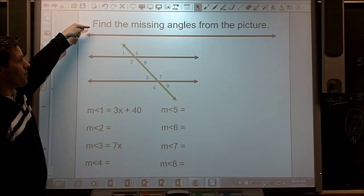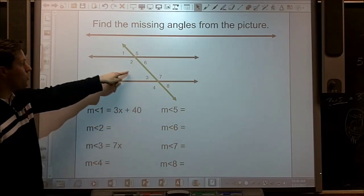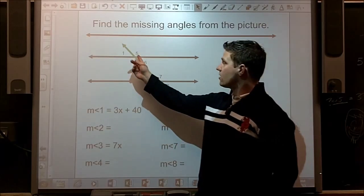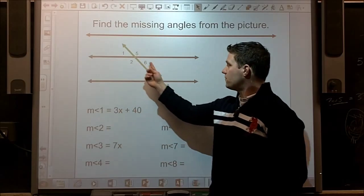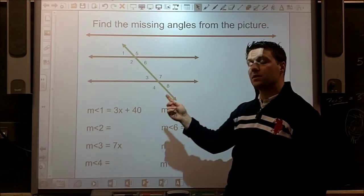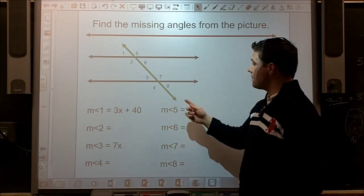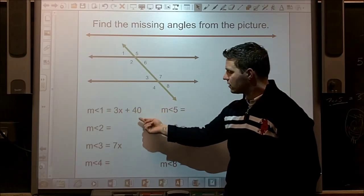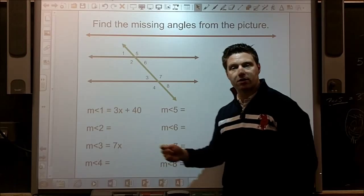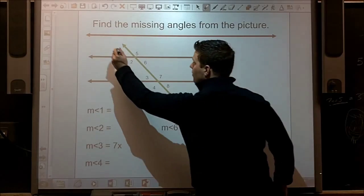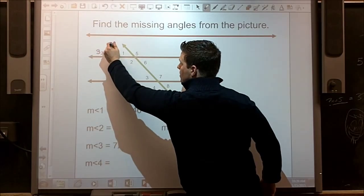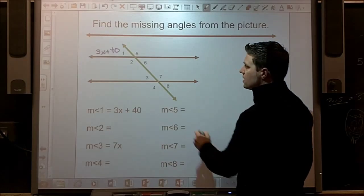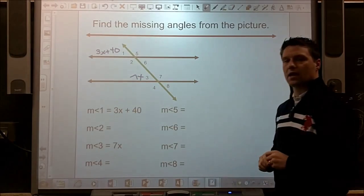Find the missing angles from the picture. So you should be familiar with this picture from my last video, and we filled in some angle measurements, like if angle 5 was 100, we would be able to fill in the rest of these angles. But this time, we're given two angles that are algebraic expressions. So I'm going to go ahead and write in that angle 1 is 3x plus 40, and angle 3 is 7x.